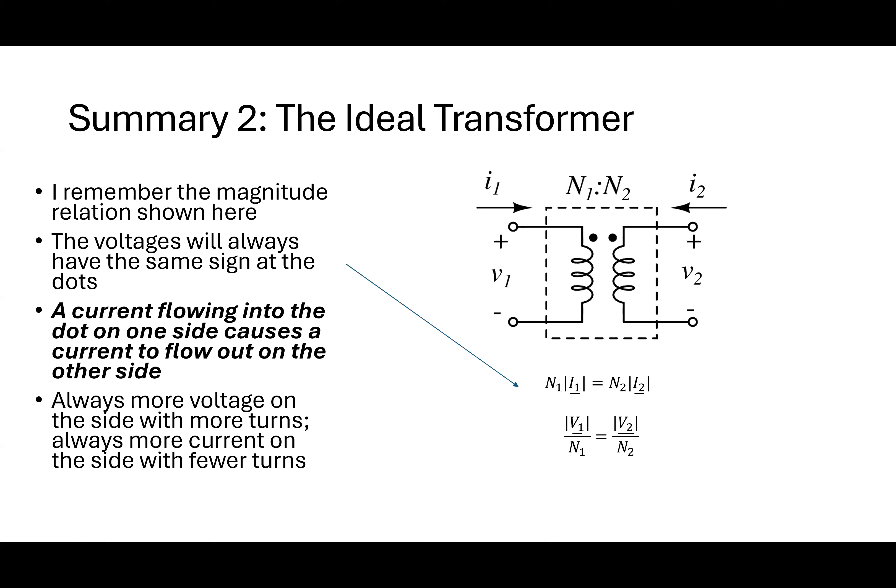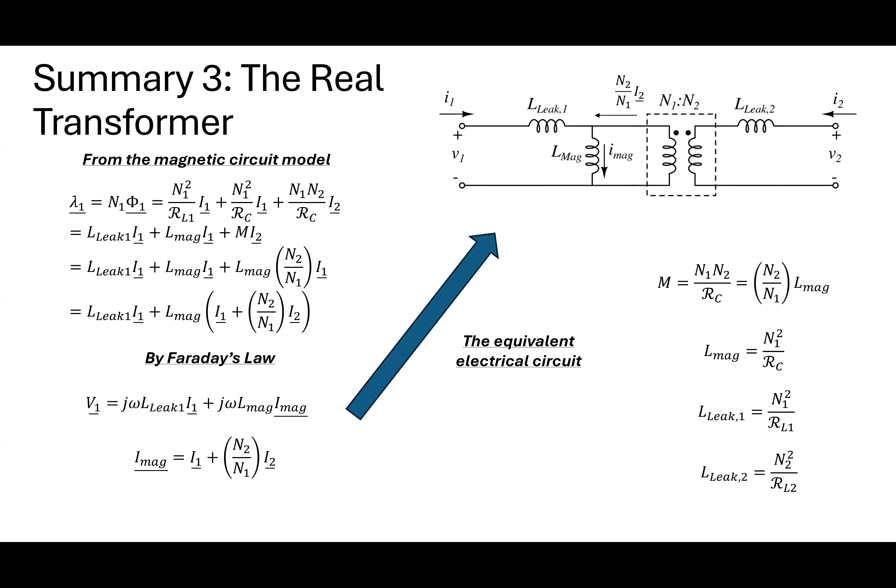No power loss is one element of an ideal transformer. There's also no flux leakage — basically the mu of the core is infinite. The job of the core is: if I apply a voltage on one side, that creates a B field through Faraday's law in the core. All of that B field created by coil one makes it through to coil two, so coil two supplies a voltage to whatever's connected on that side.